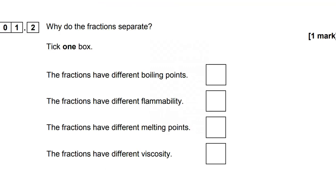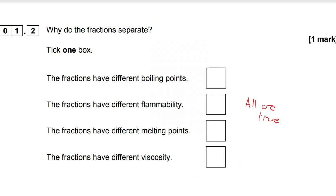On to 1.2, why the fractions separate. Now what's important to note here is that each of these four different properties are true. The fractions do have different boiling points, melting points, flammability, and viscosity. But it's the boiling points that will determine where they will condense in the fractionating column, with shorter chains condensing higher up because they have lower boiling points.